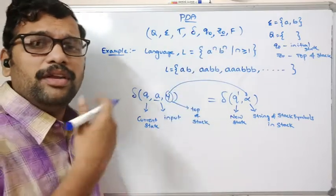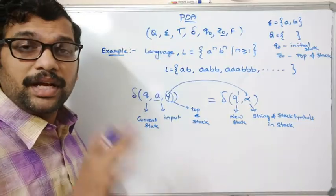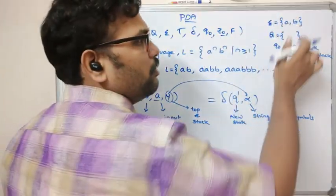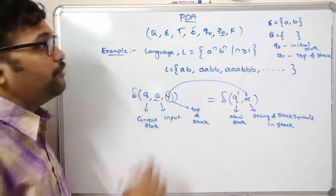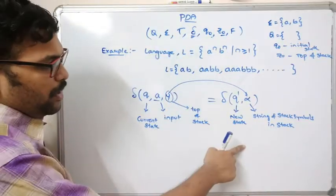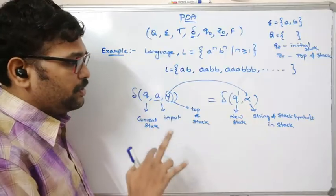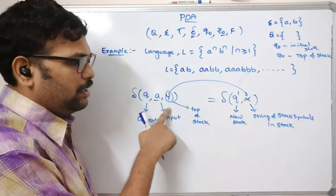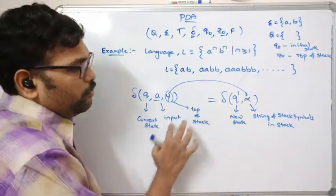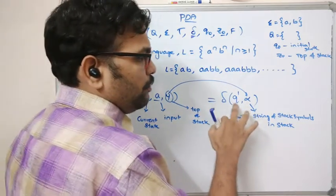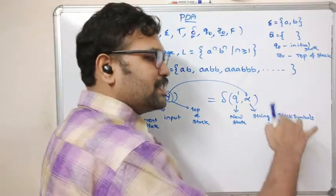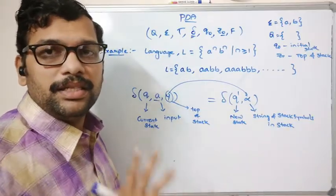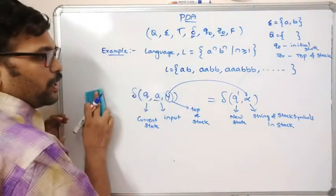F is the final state, and we need to find the number of states so we can determine the final state. The transition function delta takes a three-tuple as input: the current state, the input symbol, and the top of the stack. It produces a two-tuple as output: the new state and the string of stack symbols available in the stack.